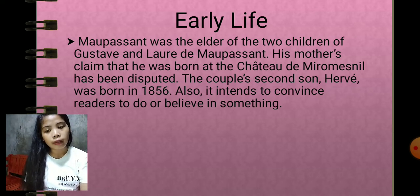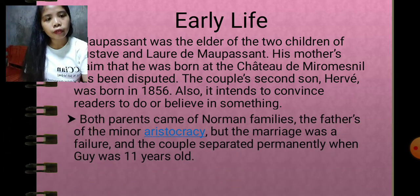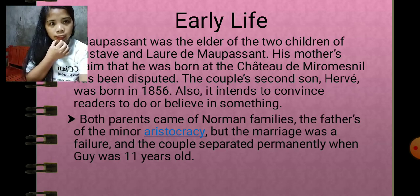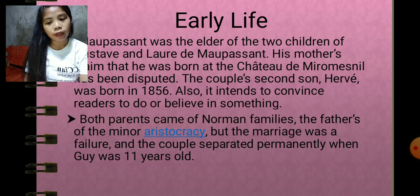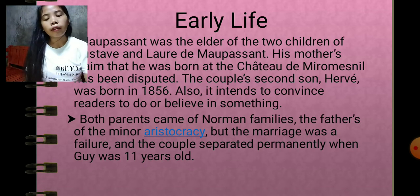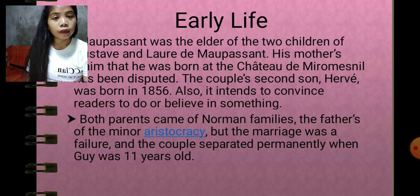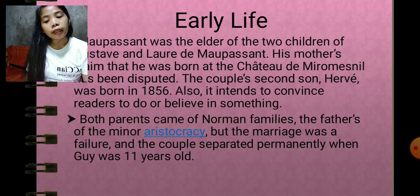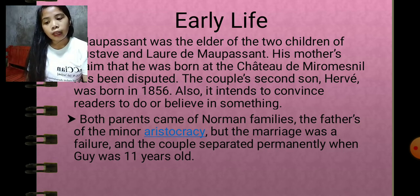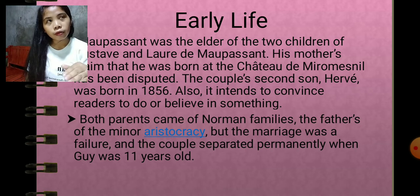Their parents both came from Norman families of minor aristocracy, but the marriage was a failure and the couple separated permanently when Guy was 11 years old.